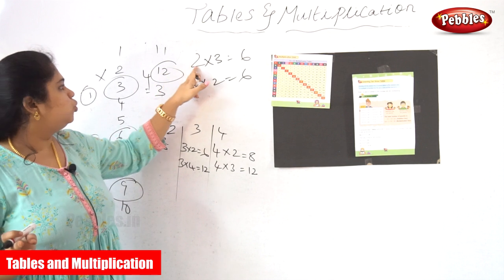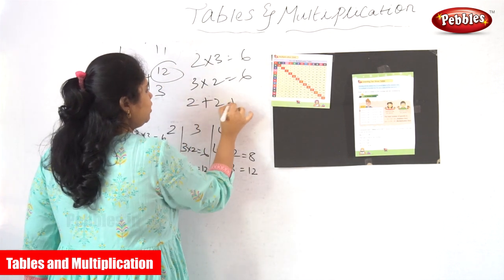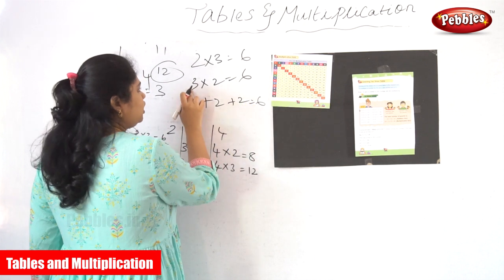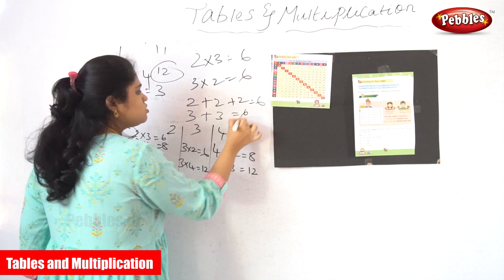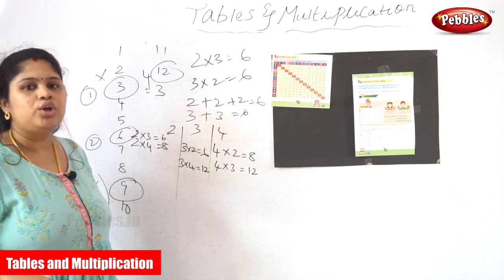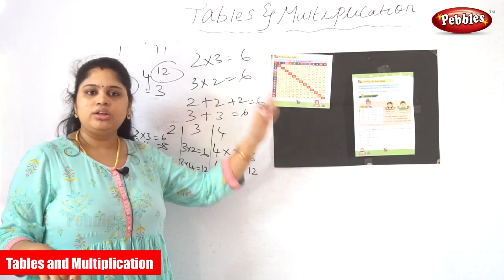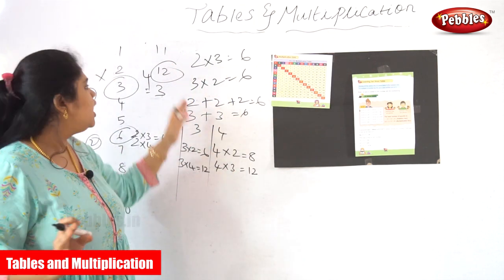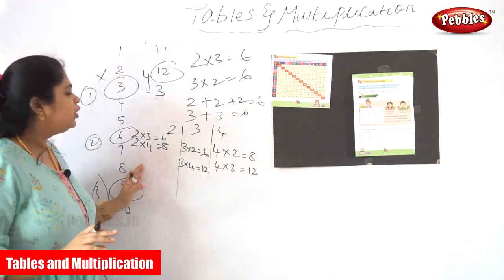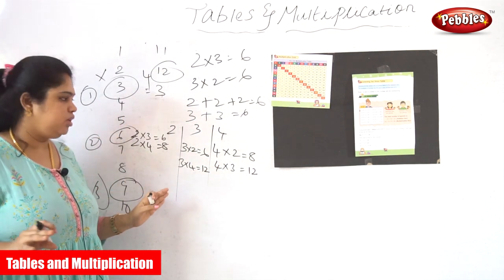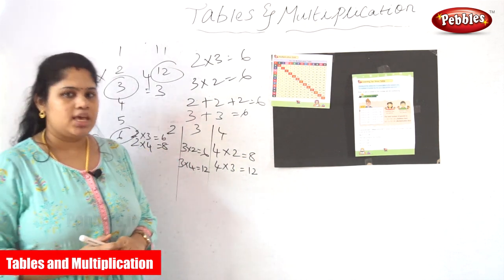So what they are telling? 2, 3 times means 2 added 3 times is 6. What you are telling? 3, 2 times means 3 added 2 times is also 6. Anyway, the answer is going to be the same. So that is what I am telling — 2 into 3 and 3 into 2 have the same meaning. As like 2 into 4 is equal to 8, which is the same meaning as 4 into 2 is equal to 8.